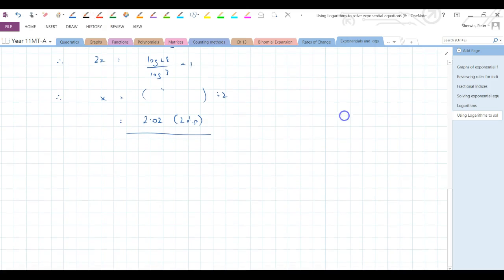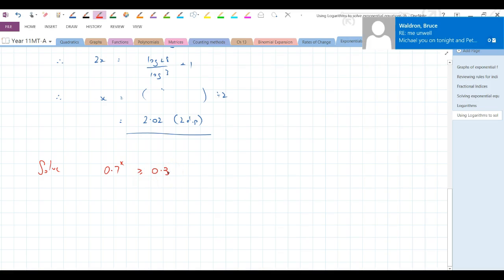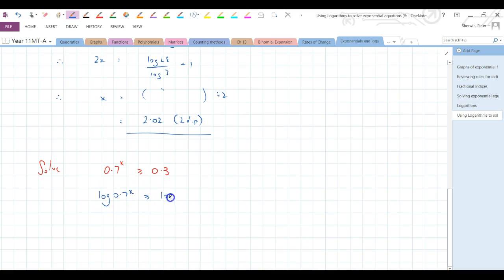Okay, we'll have a look at one more example. It'll be an inequality this time. We're going to solve 0.7 to the power of x is greater than or equal to 0.3. So just as a little bit of a clue here, when you see x in the power, a solving method, unless you're putting it straight into your calculator, the solving method is to take logs of both sides. So take logs of both sides first. Log of 0.7 to the power of x is greater than or equal to log 0.3. And then you use power law and you say x log 0.7 is greater than or equal to log 0.3.